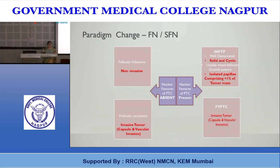A paradigm change has occurred. Previously, under follicular neoplasm, follicular adenoma (totally non-invasive) and follicular carcinoma (defined by capsular or vascular invasion) were included, but cytology could not differentiate between them. Then came the follicular variant of PTC — when we became familiar with diagnosing it based on PTC nuclear features in a follicular pattern tumor, these lesions were again placed under follicular neoplasm, though capsular/vascular status remained unknown.